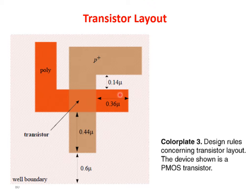This set of rules is verified by software. You have a long set of rules — hundreds of rules. When the designer has the layout, they must run the so-called design rule checker to verify that all these rules are satisfied. Only if all the rules are satisfied can the layout be put into production.